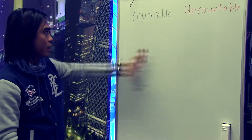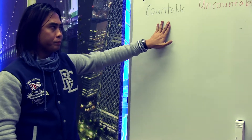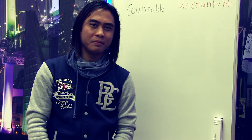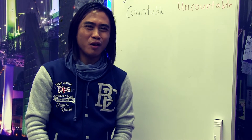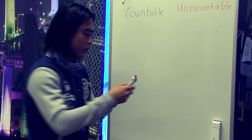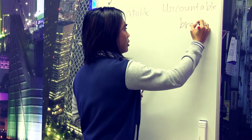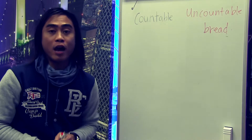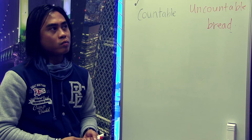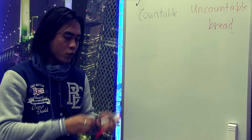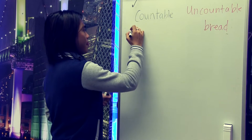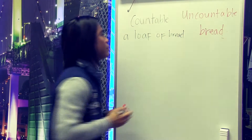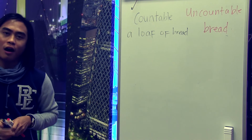So, I will give examples. Bread — can you count it? Maybe yes, maybe no, but that is an uncountable noun. So, I will write it here: bread. If you want to count bread, you can say a loaf of bread.